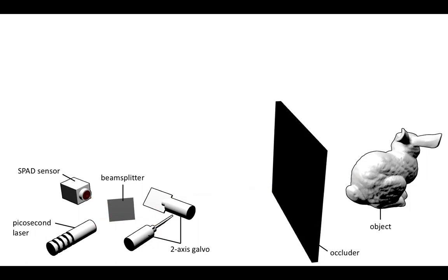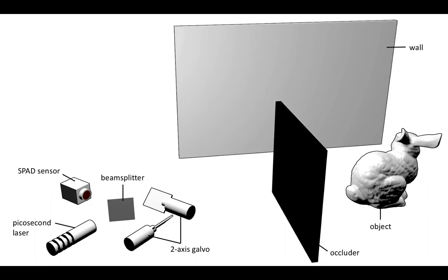The goal of non-line-of-sight imaging is to reconstruct the shape and albedo of objects that are not within the system's line of sight. The idea is to use surrounding objects, such as walls, to act as diffuse reflectors.